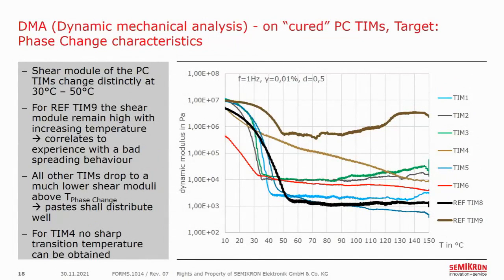Now let's have a look at the dynamic mechanical analysis, or DMA. The DMA analysis is used to investigate the viscosity or hardness of the material in a hot and cold state and to estimate the phase change temperature. Beside TIM4, all materials show a sharp transition between 30 and 50 degrees. The shear modulus of REF TIM9 remains quite high compared to all other materials, which correlates to our experience with bad distribution behavior in a hot state. All other materials are below TIM9 and should therefore distribute better.